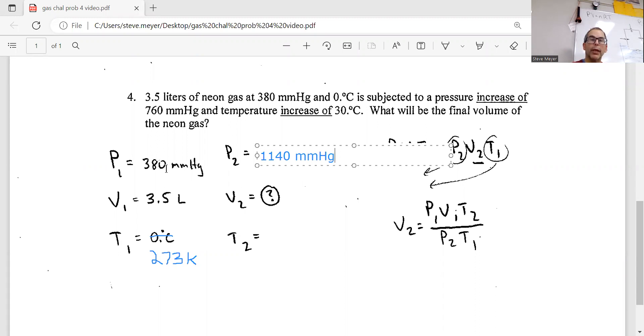Notice what happened. We had an increase of 760, so we added 380 plus 760, which is 1140.